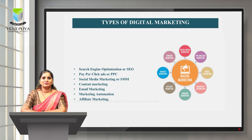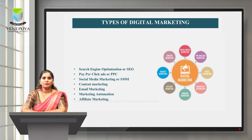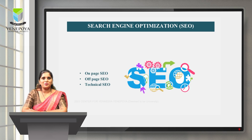There are several types of digital marketing. The first is search engine optimization or SEO. Others include pay-per-click ads or PPC, social media marketing or SMM, content marketing, email marketing, marketing automation, and affiliate marketing. We'll see each one by one.